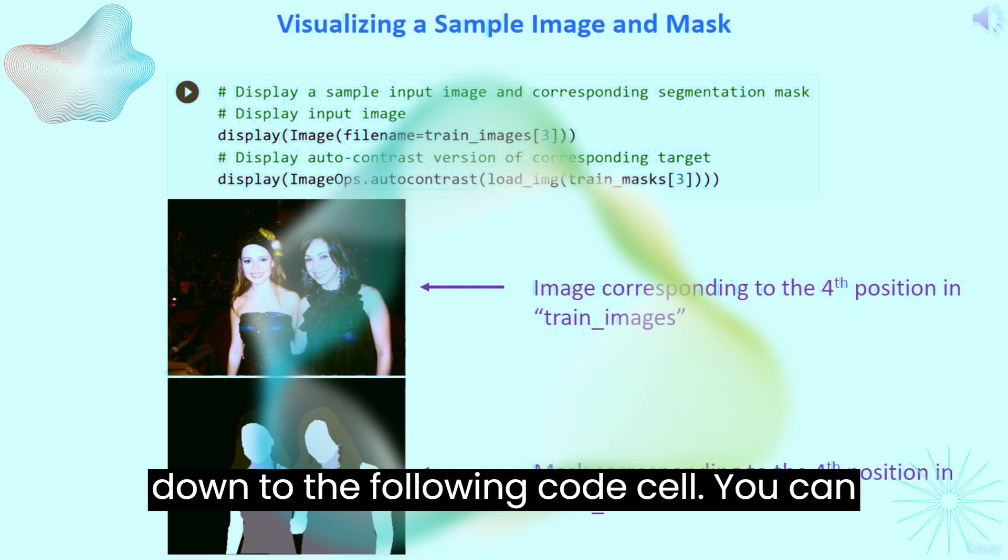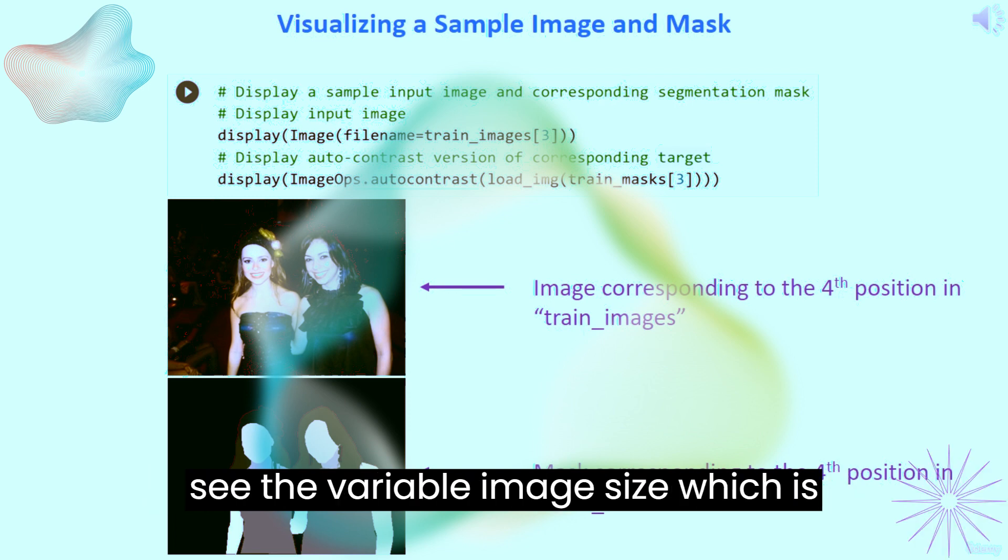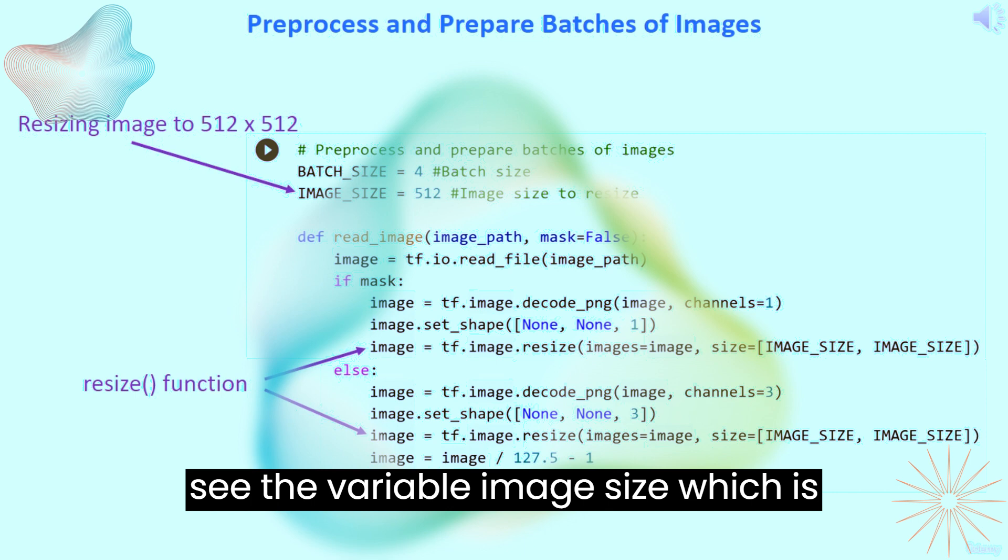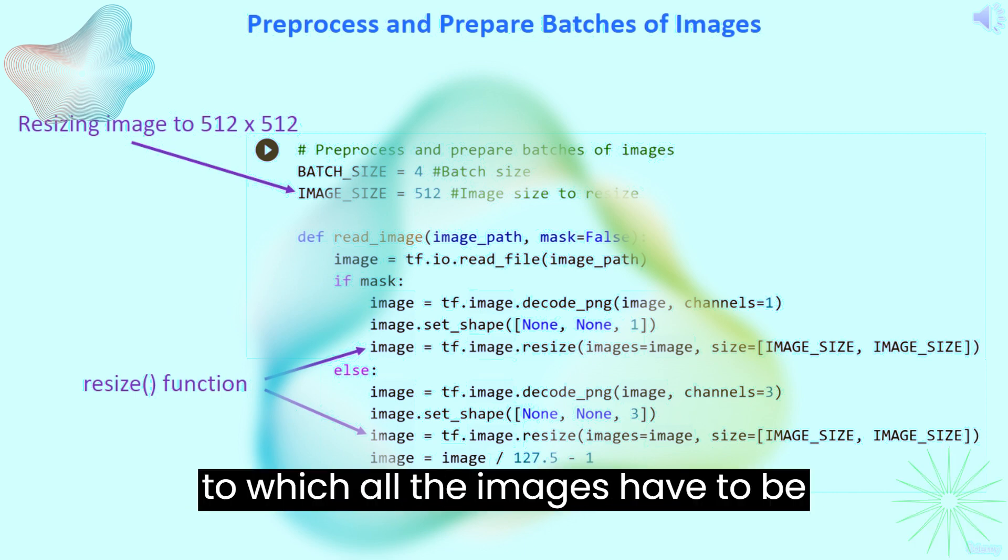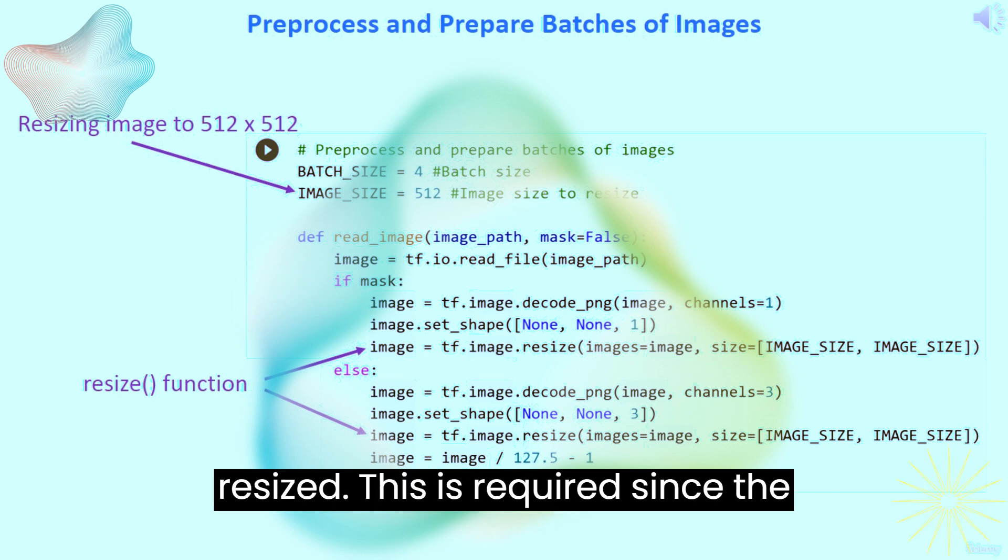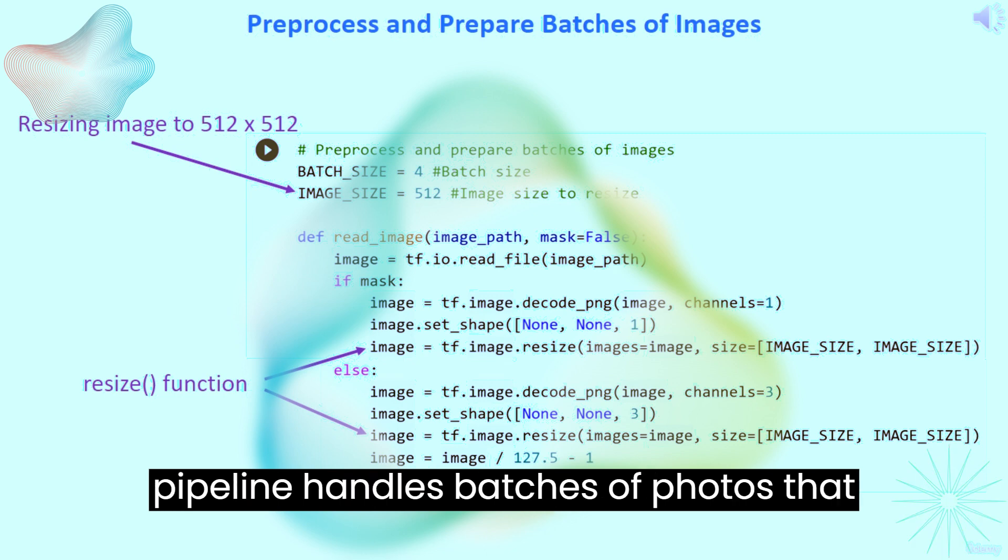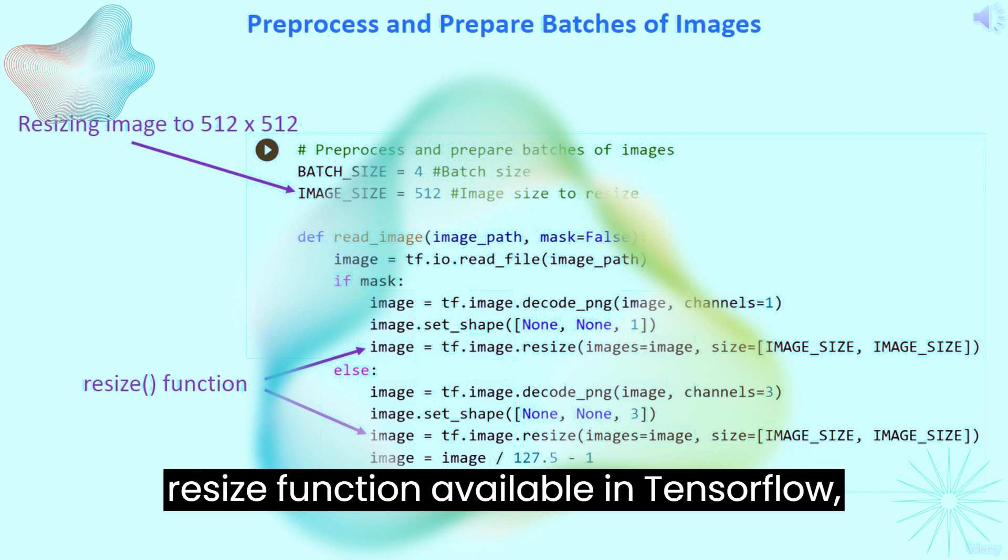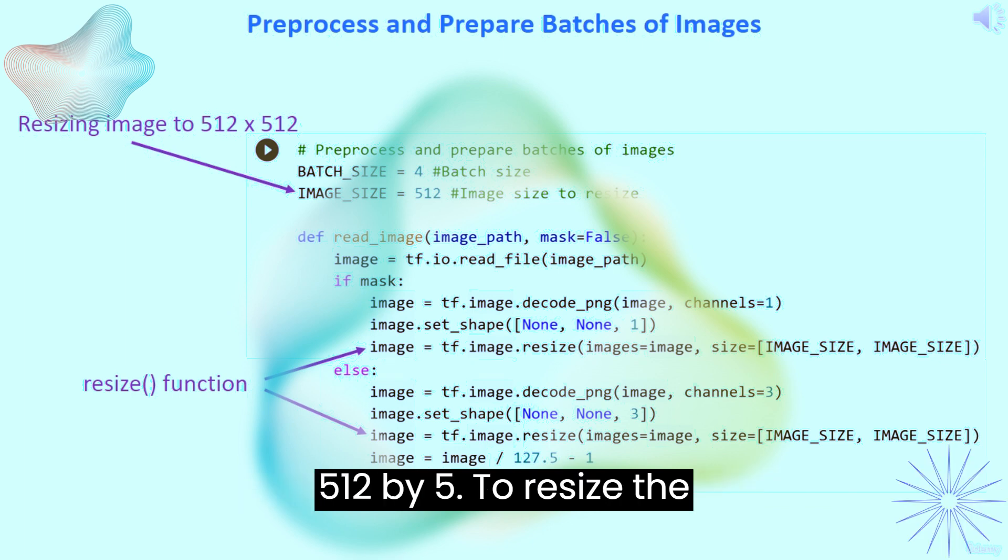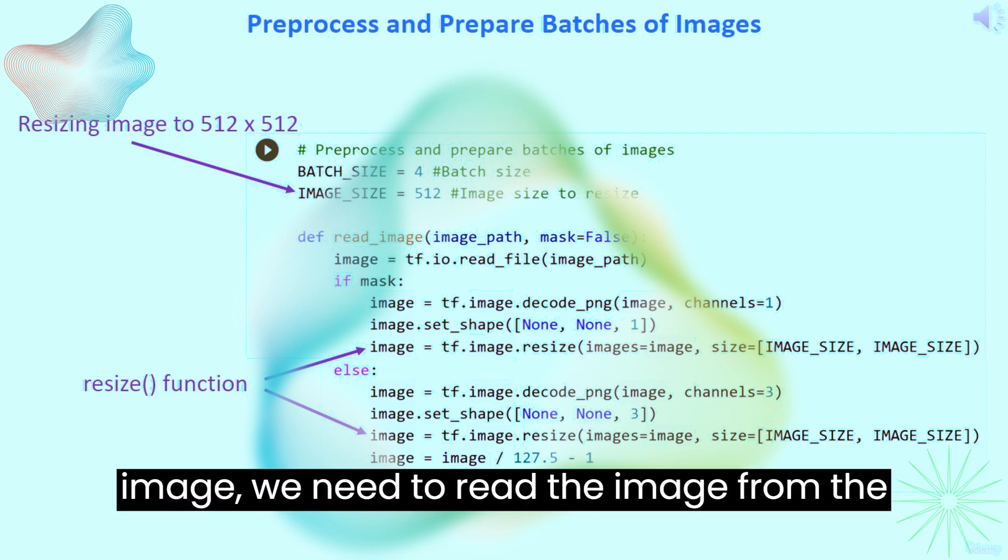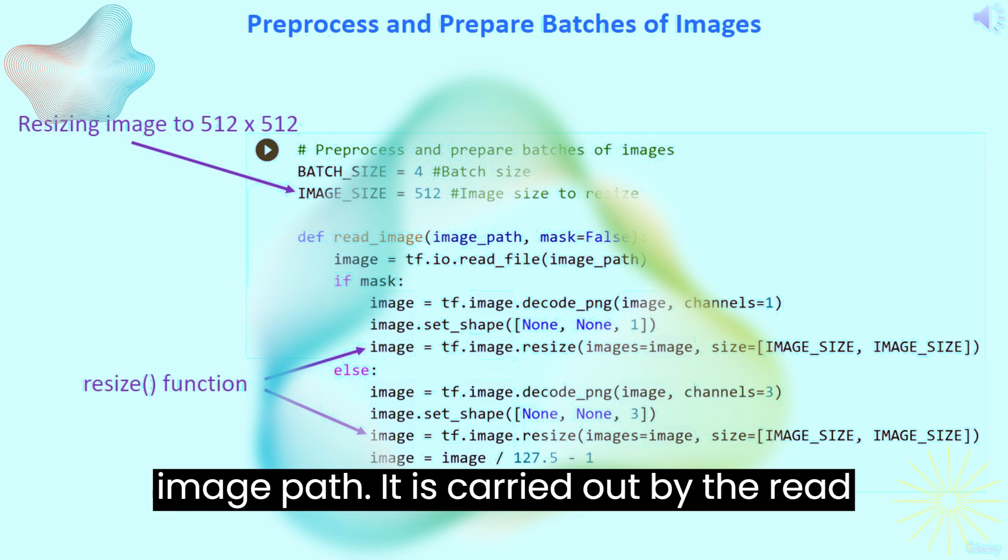Scroll down to the following code cell. You can see the variable image_size which is assigned to 512. This is the size to which all the images have to be resized. This is required since the pipeline handles batches of photos that must all be the same size. Using the resize function available in TensorFlow, we resize the images to the size of 512 by 512. To resize the image, we need to read the image from the image path.